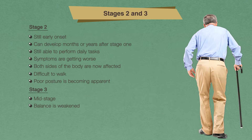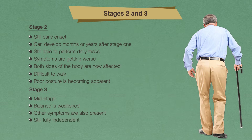Stage three of Parkinson's disease is considered to be mid-stage. Balance is weakened as it is becoming more difficult to react quickly and involuntarily to prevent falling. Other symptoms are also present at this stage. An important identifying factor of stage three is that you are still fully independent in your daily living activities, but significantly impaired by the symptoms.